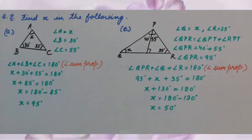When we insert the values, X plus 30 degrees plus 55 degrees equals 180 degrees. When we solve it, X plus 85 degrees equals 180 degrees. Transposing 85, we get X equals 180 degrees minus 85 degrees. So the value of X is 95 degrees.